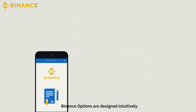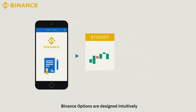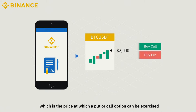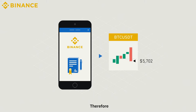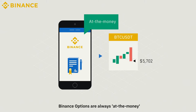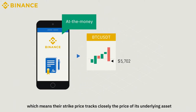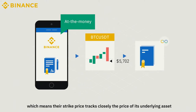Binance Options are designed intuitively with only one strike price, which is the price at which a put or call option can be exercised, and it is equivalent to the price of the BTC/USDT perpetual contract on Binance Futures. Therefore, Binance Options are always at the money, which means their strike price tracks closely the price of its underlying asset.